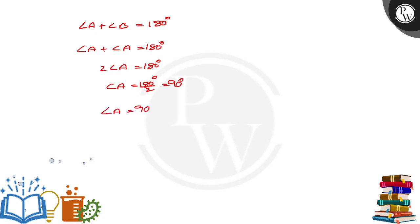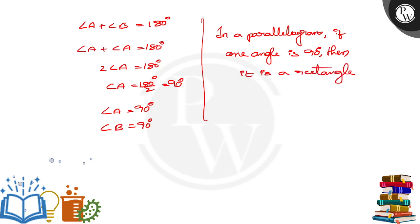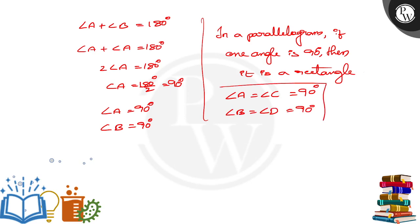So angle A is 90 degrees and angle B is also 90 degrees. In a parallelogram, if one angle is 90 degrees, then it is a rectangle. Because opposite pairs of angles are equal: angle A equals angle C, so C is also 90; and angle B equals angle D, so D is also 90. All four angles are equal to 90 degrees, therefore ABCD is a rectangle. Thank you.